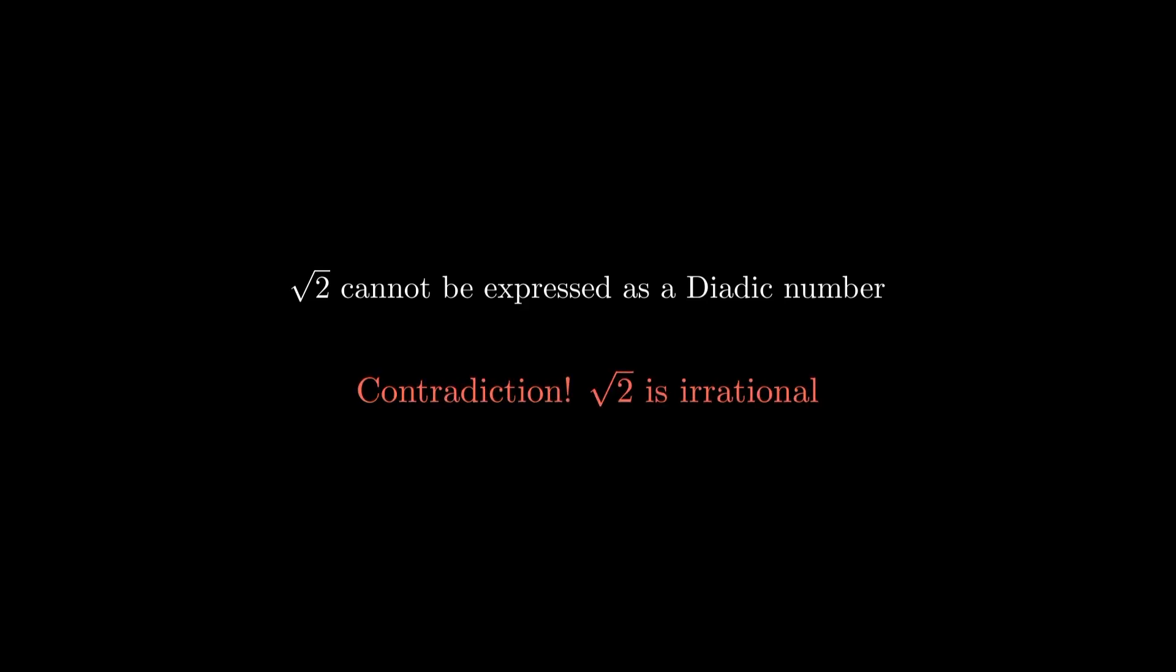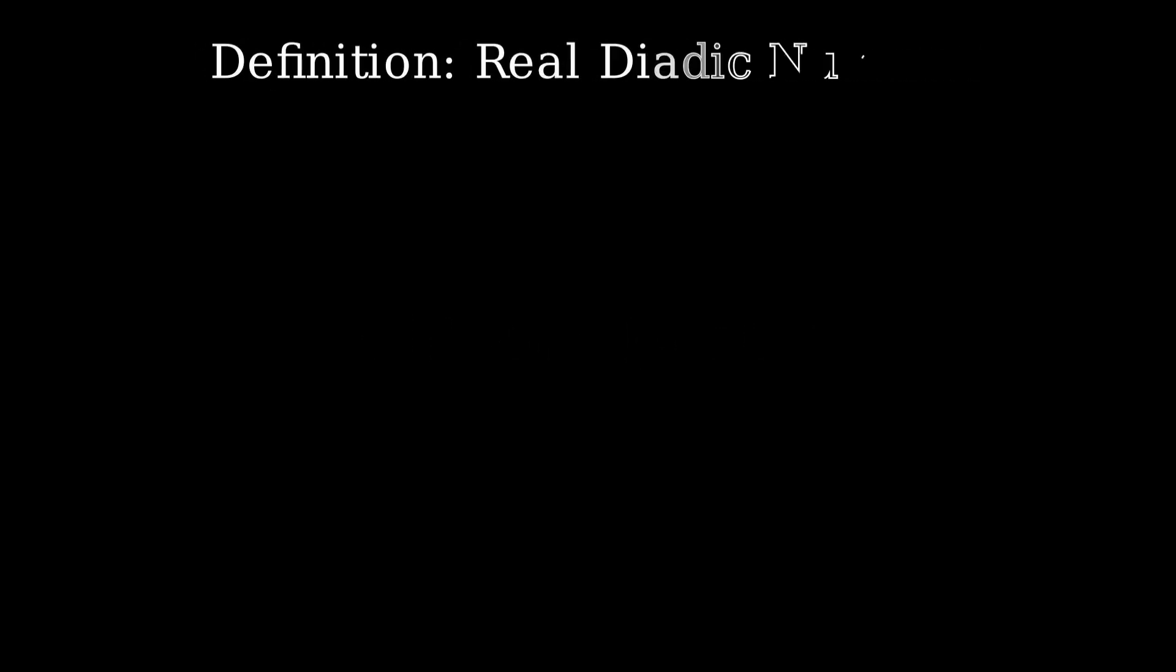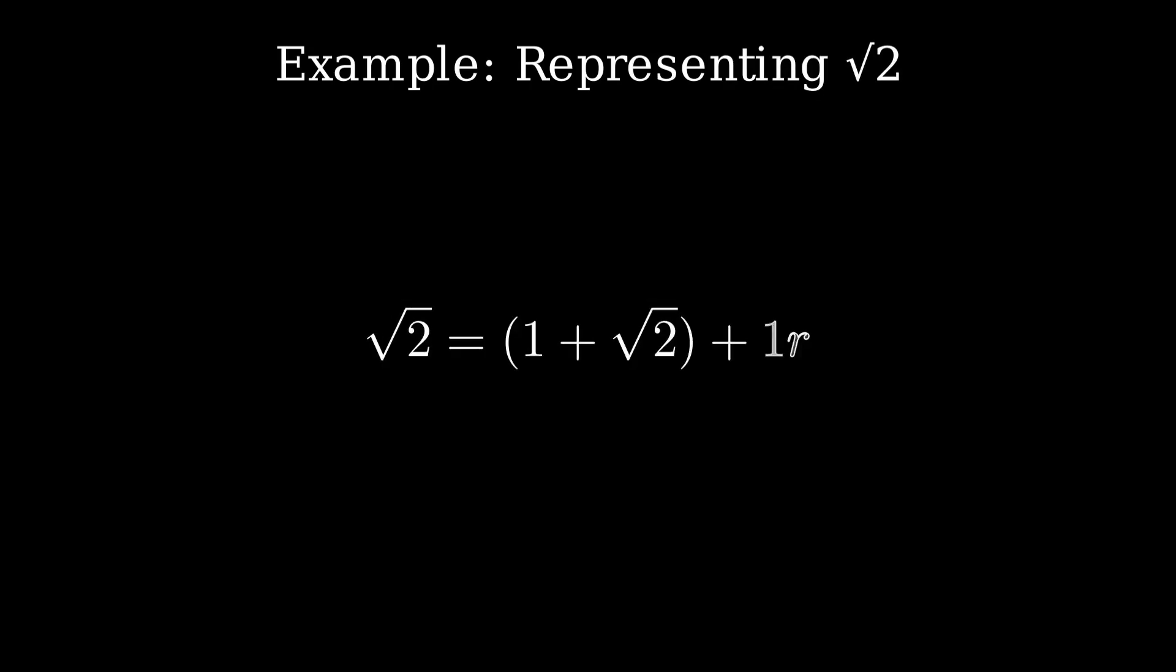Up to this point, we've seen that square root of 2 cannot be expressed using only rational coefficients in the dyadic system. This limitation motivates a natural extension, one where the coefficients themselves can be real numbers. So we define a real dyadic number as an expression of the form alpha plus beta times r, where both alpha and beta are real numbers. With this broader definition, we can now represent numbers like square root of 2. For example, square root of 2 equals 1 plus root 2 plus 1 times r. Let's verify that. Replacing r with negative 1, we get 1 plus root 2 minus 1, which simplifies to root 2. It works. This confirms that by extending the dyadic system to real coefficients, we unlock the ability to represent irrational numbers, including the very ones that were impossible before.